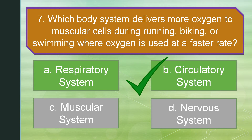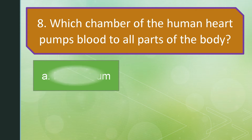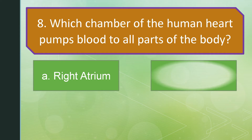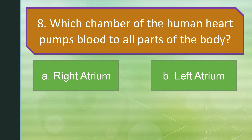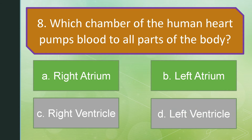Question number eight. Which chamber of the human heart pumps blood to all parts of the body? Is it letter A: Right atrium. Letter B: Left atrium. Letter C: Right ventricle. Or letter D: Left ventricle. The correct answer is letter D: Left ventricle.